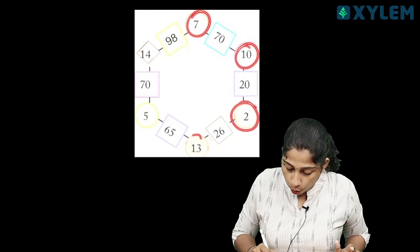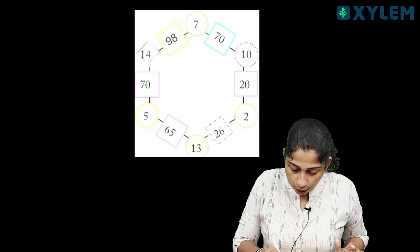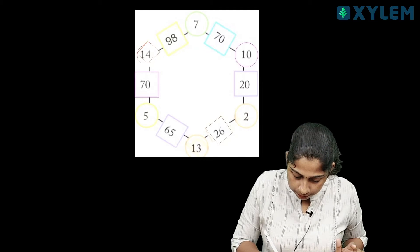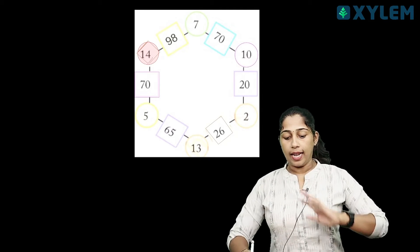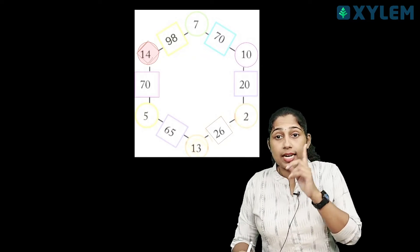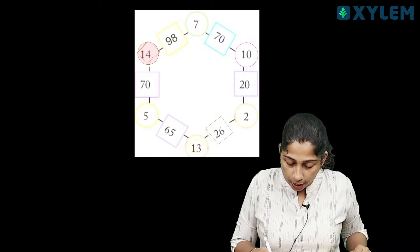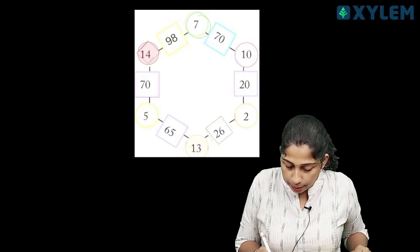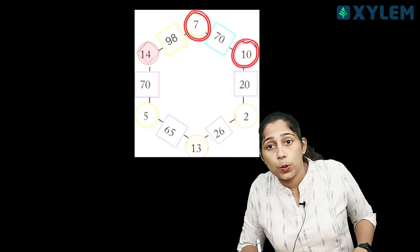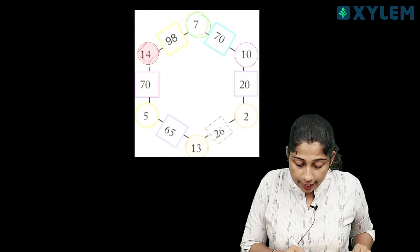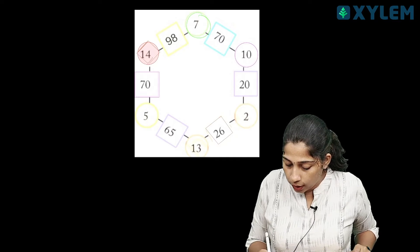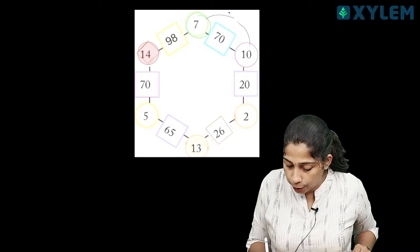We are putting a number in all the vertices. This is what we will do. All the numbers are written. You can see how you can do this. The two numbers are 7 and 10. So we will do 7 into 10. This is the number, so this answer is 7.